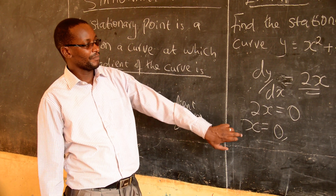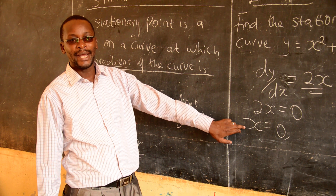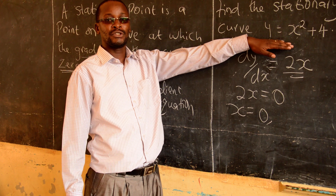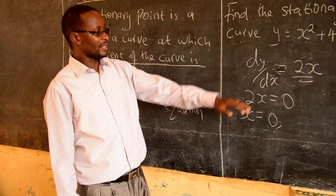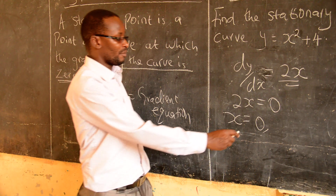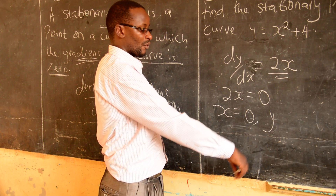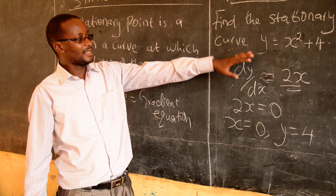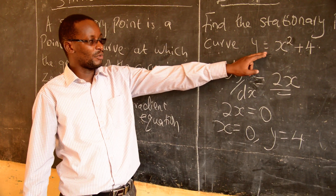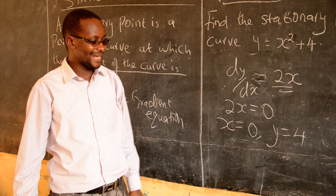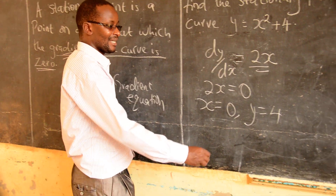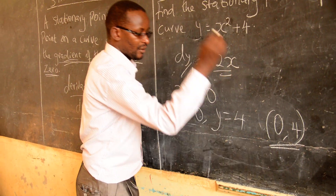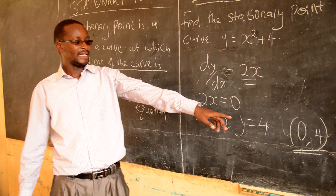So if x is zero, you get the value of y by substituting x equals zero in the original equation for y. So if you substitute x equals zero here, what would be your value for y? So y is equal to four. That means this curve, y equals x squared plus four, has a stationary point and the point is (0, 4).